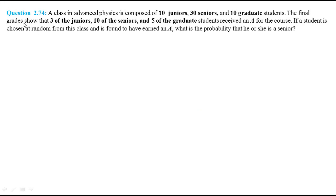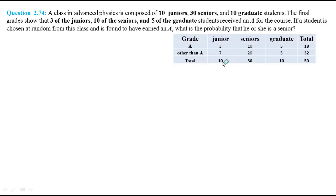Now consider problem 2.74: a class in advanced physics is composed of 10 juniors, 30 seniors, and 10 graduate students. The final grades show that three of the juniors, 10 of the seniors, and five of the graduate students received an A. If a student is chosen at random and is found to have earned an A, what is the probability that he or she is a senior? We make a summary table using the above information.